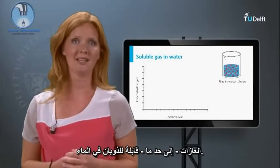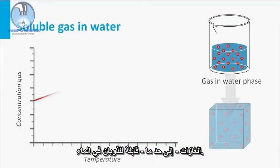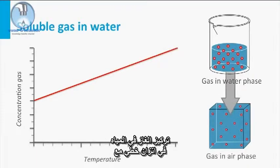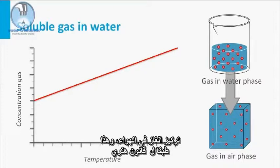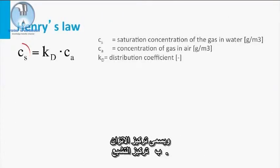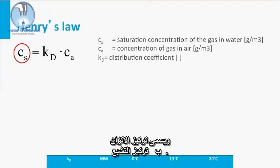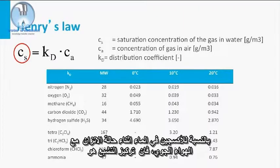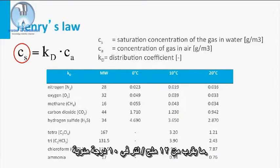Gases are, to some extent, soluble in water. The concentration of a gas in the water phase is an equilibrium linear to the concentration of the gas in the air phase. This equilibrium is called Henry's law. The equilibrium concentration is also called the saturation concentration. For oxygen in water in equilibrium with the atmosphere, the saturation concentration is approximately 12 milligrams per liter at 10 degrees Celsius.